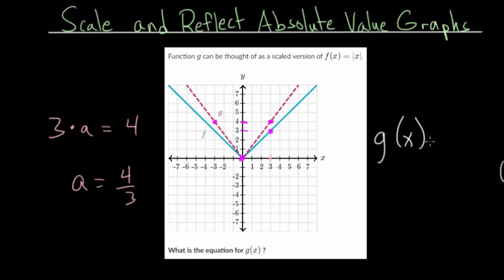So g of x would be 4 thirds times the absolute value of x. And this should make sense, because if you plug in 3, then the absolute value of 3 is 3. And you'd have 3 divided by 3, so those would cancel. And then you would just get g of 3 equal to 4, which is what you'd expect, because when you plug in 3 to g, you do get 4. And likewise, if you plug in negative 3, the absolute value makes it positive, the 3s cancel, and you again get 4.